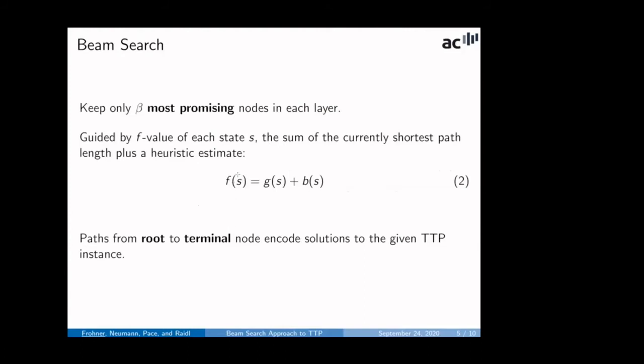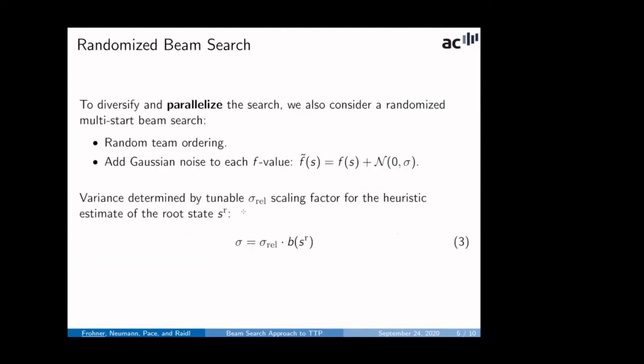Then on the implementation side, we make use of a memory-limited beam search variant to cover really high beam widths. And to diversify and parallelize, we add some randomization, as we'll see later. So, again, the beam search sorts the nodes in each layer, the states in each layer, according to some F value known from A star. And then when we hit the terminal nodes, it's also possible to run into dead ends, then we have found a feasible solution.